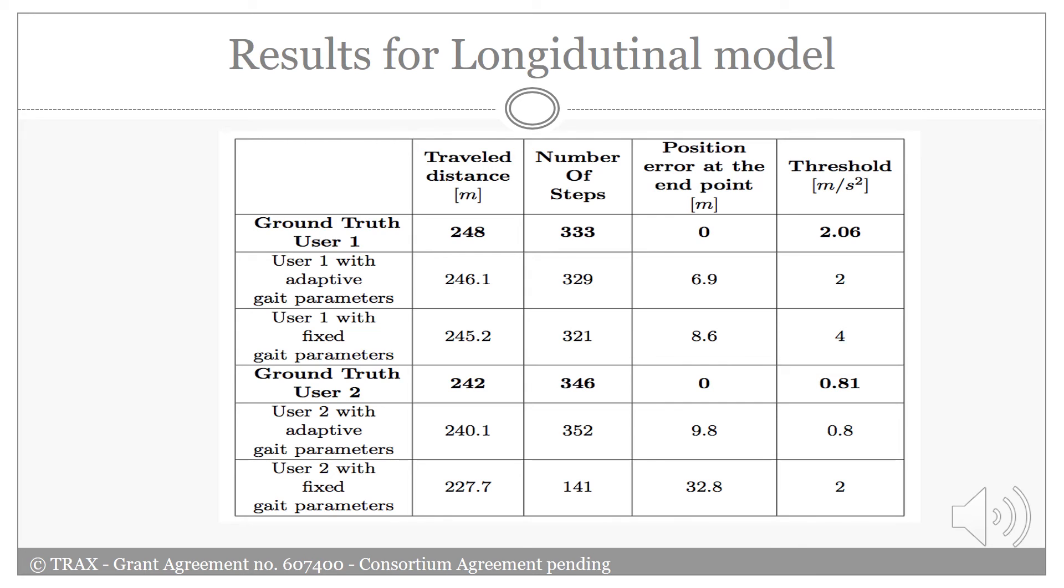However, the fixed threshold did work less well for the second user. In that case, choosing a too large step detection threshold results in too few steps being detected. Hence, the threshold that suits user 1 works less well with user 2. As you can see, not only the number of steps are affected, but also the step length adapts to satisfy the condition for travel distance.